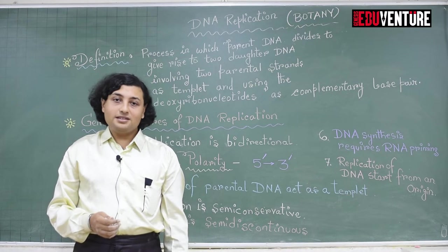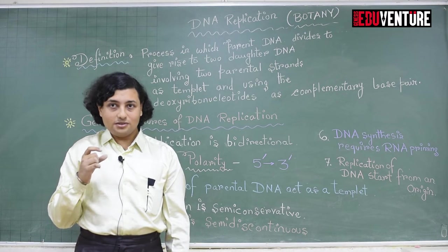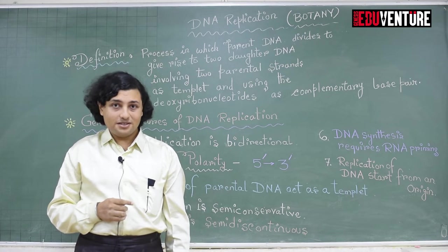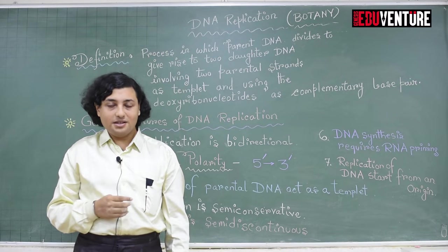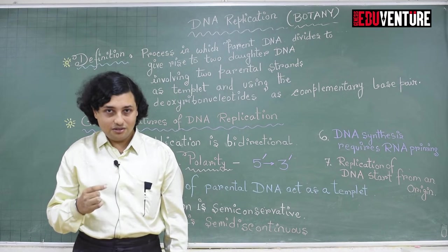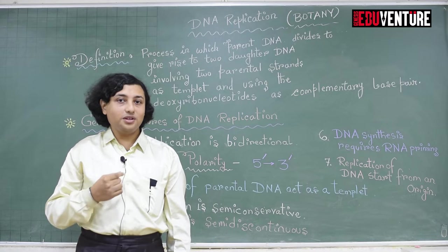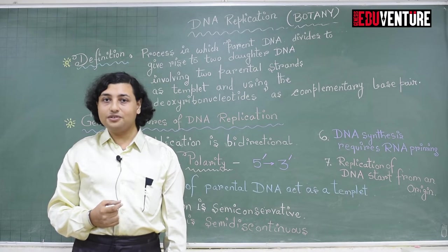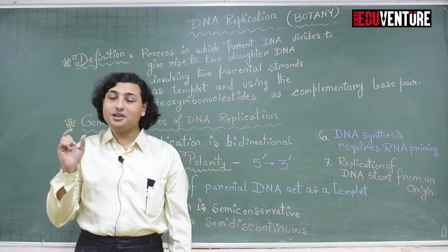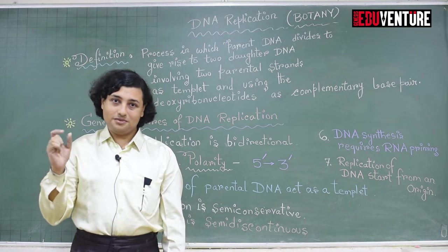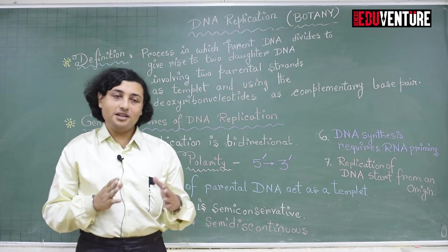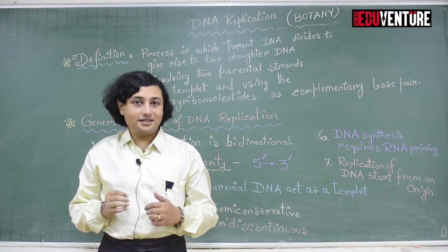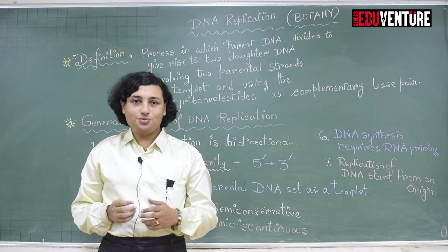We all know that the characteristics which are present in different organisms vary from one to another, but it is also clear that the information or message which is going to determine or regulate the different characteristic features present in different individuals lies in a specialized biomolecule. This specialized biomolecule in all prokaryotes and eukaryotes is a double helical structure known as DNA.